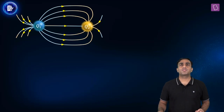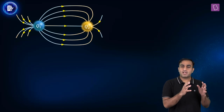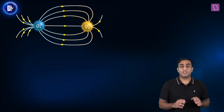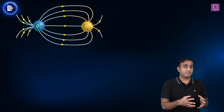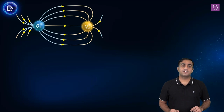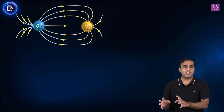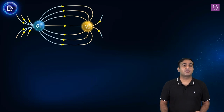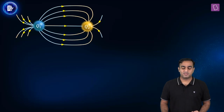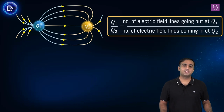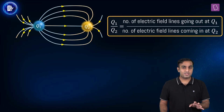For example, if you have a plus two microcoulomb charge and draw one hundred field lines originating from it, and you also have a minus one microcoulomb charge, then fifty field lines will end on it. Do you see what to do with this problem? To find the ratio Q1 by Q2, all you need to do is count the number of field lines associated with each charge and take the ratio.